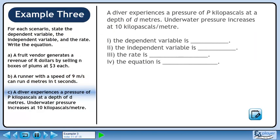In Part C, a diver experiences a pressure of P kilopascals at a depth of d meters. Underwater pressure increases at 10 kilopascals per meter.